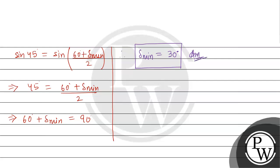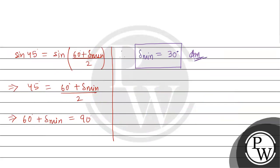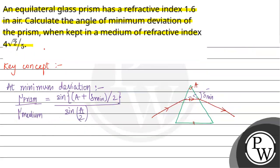So the final answer for the angle of minimum deviation of the prism is 30 degrees. Hope you understand it well.